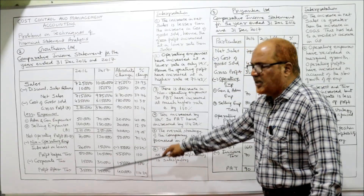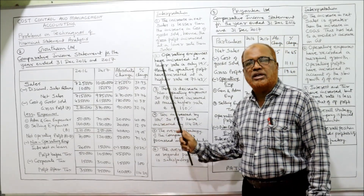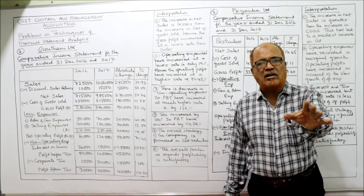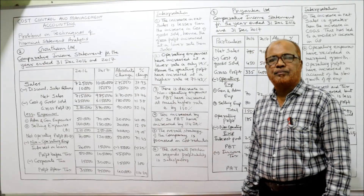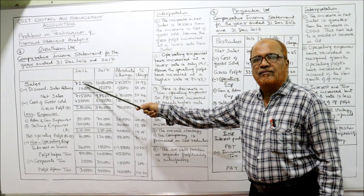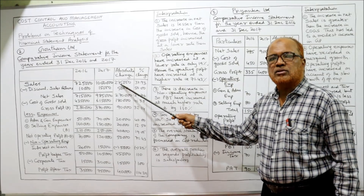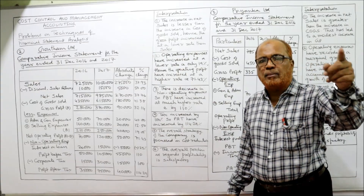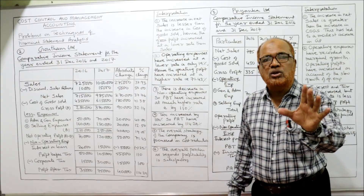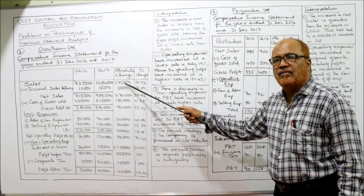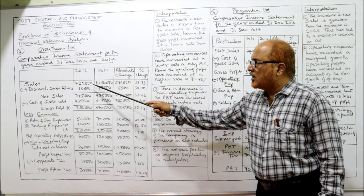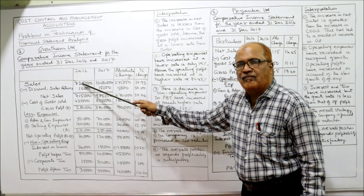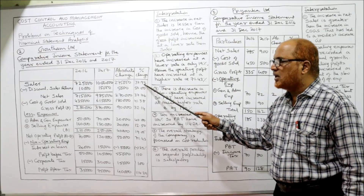Now we calculate absolute change and percentage change. Absolute change means current year value minus last year value. For sales: 10,00,000 minus 725,000 gives 275,000. Percentage change is absolute change divided by last year figure multiplied by 100: 275 divided by 725 into 100 gives 37.93%.